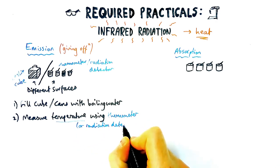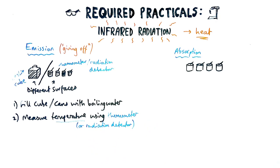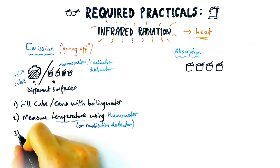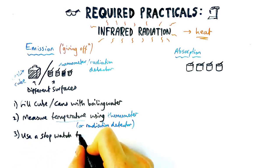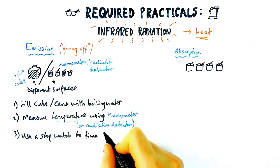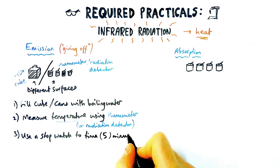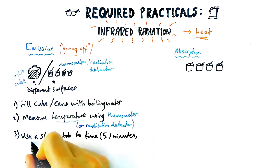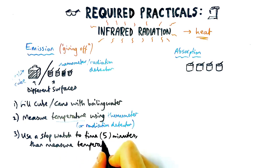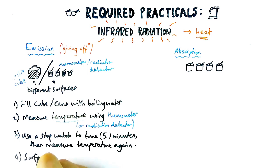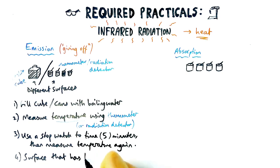It's really important that in this practical we are making sure we are mentioning our equipment. We're going to use a stopwatch to time a period of time — let's say five minutes — for how long the practical is going to run for. Then we're going to measure the temperature or the radiation using the thermometer.